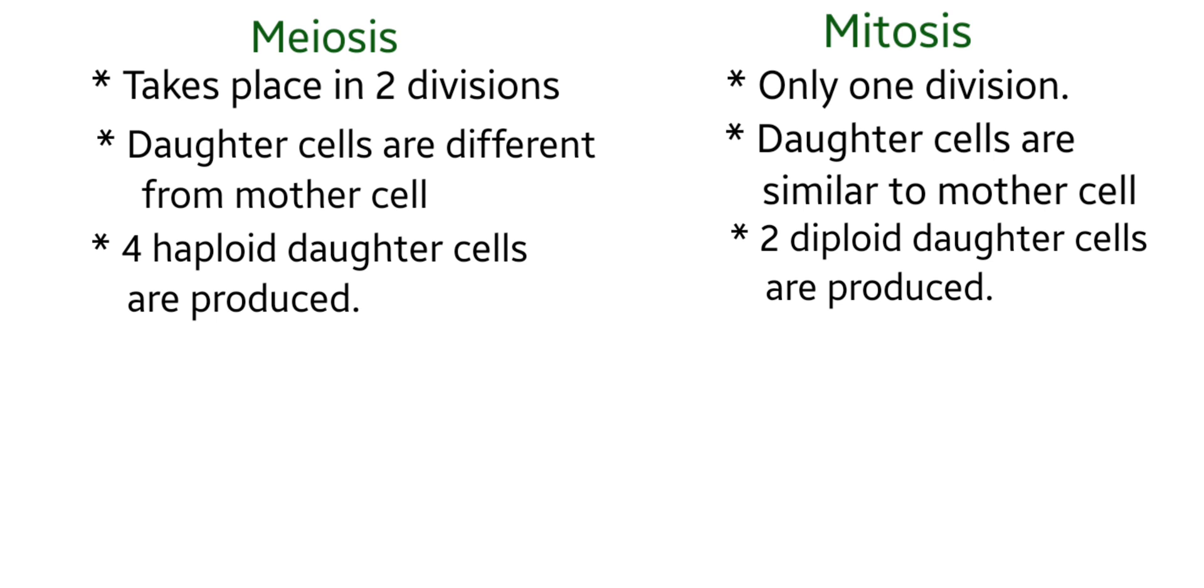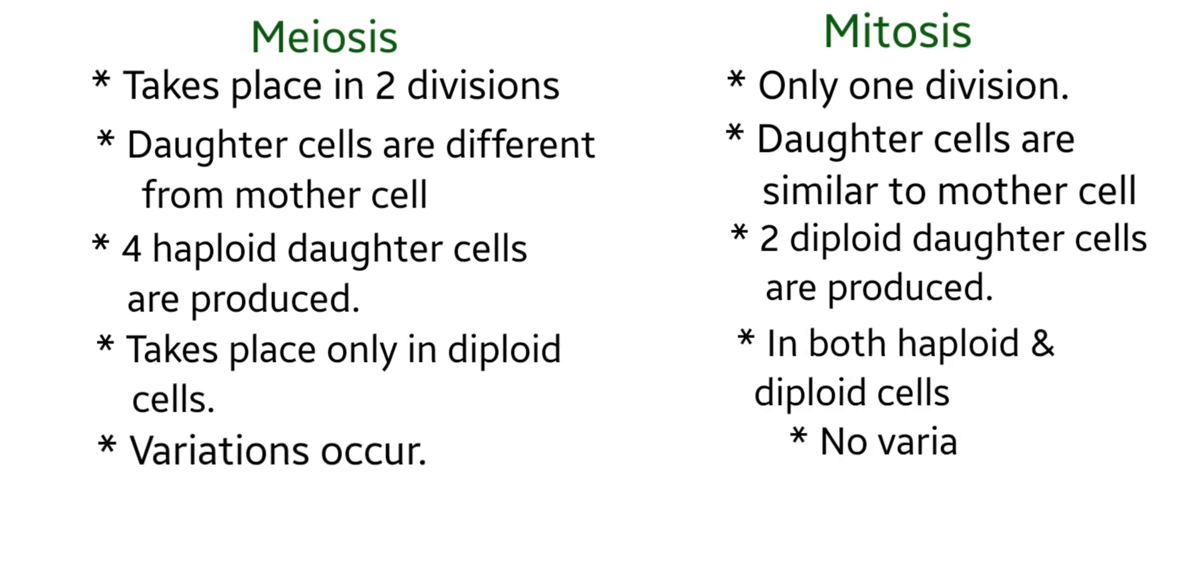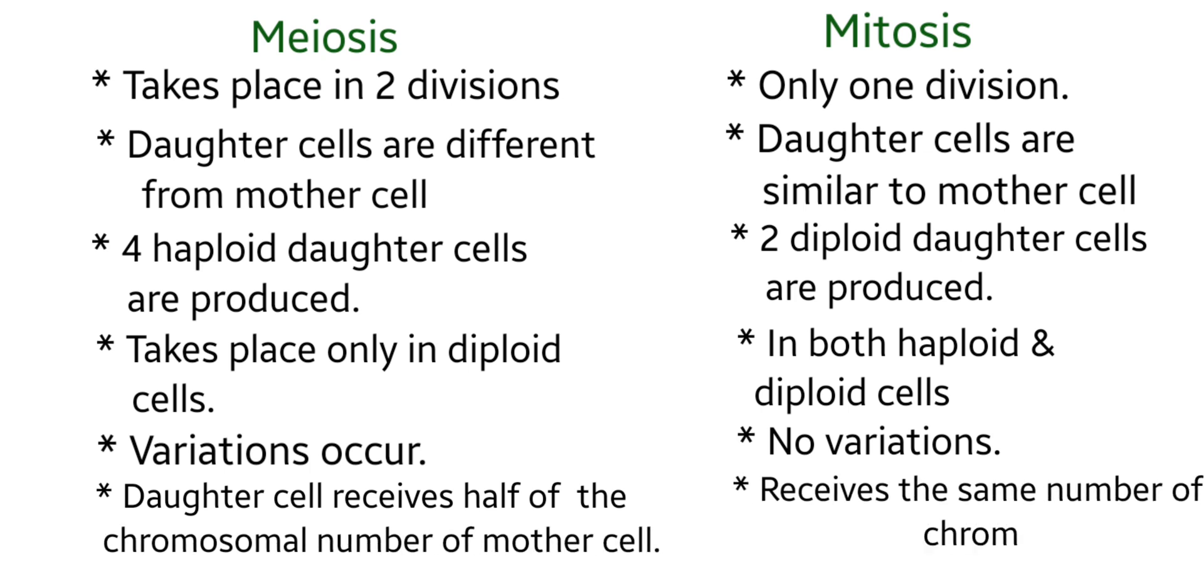Meiosis takes place only in diploid cells, but mitosis takes place in both diploid and haploid cells. Variations occur due to the changes that take place in the chromosomes in meiosis. No such variations occur in mitosis.